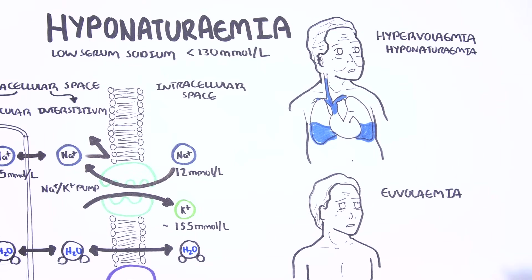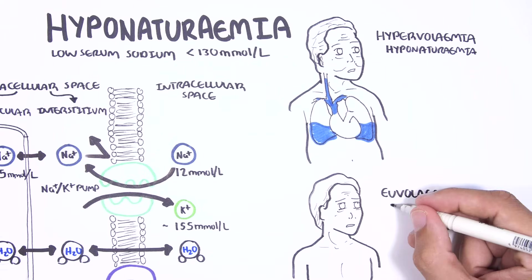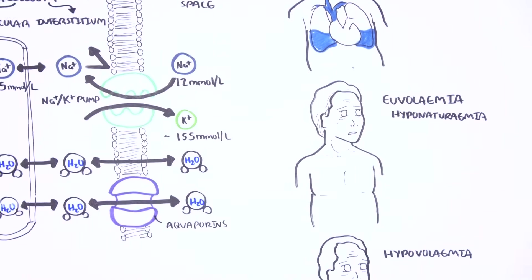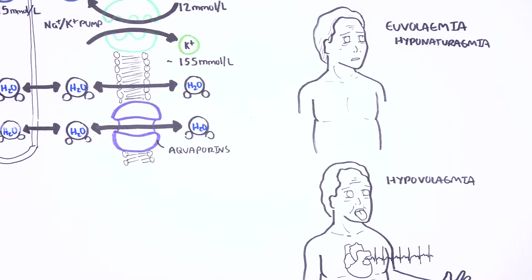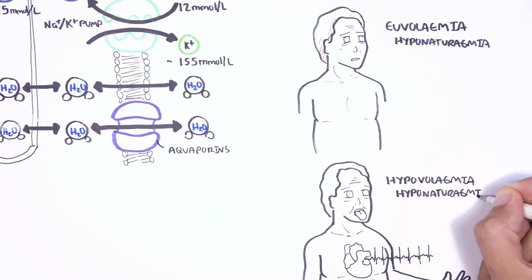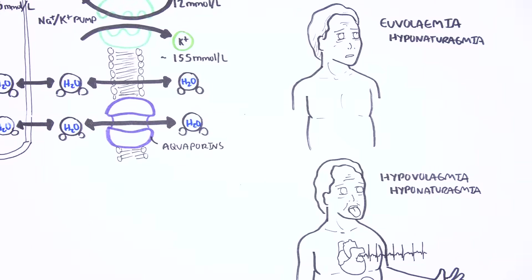Euvolemic hyponatremia is someone with low serum sodium but whose fluid status is normal. Hypovolemic hyponatremia is someone with low serum sodium who is dehydrated and would therefore have a fast heart rate and low blood pressure, for example.